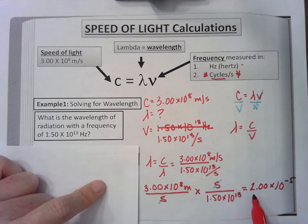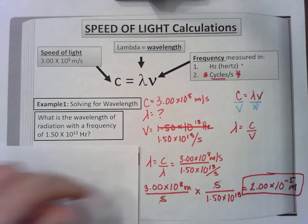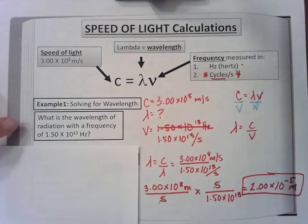My calculator gave me 2.00 times 10 to the negative 5, and the only unit I have not canceled out is meters. So the unit becomes meters, and that is our answer: what is the wavelength of radiation with a frequency of 1.50 times 10 to the 13th Hertz?